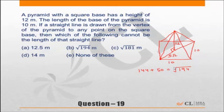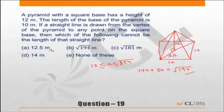So the range of possible lengths for the straight line is from 12 to square root of 194. Any length in this range is possible. Now, 12 squared is 144, so root 144 is 12, and the upper limit is root 194 — all values in between are possible. However, 14 is not possible because 14 squared is 196, which exceeds 194. So 14 meters cannot be the length.